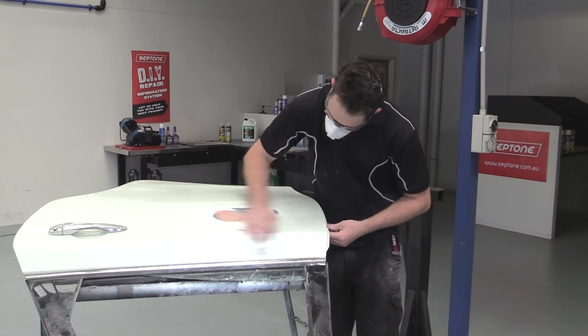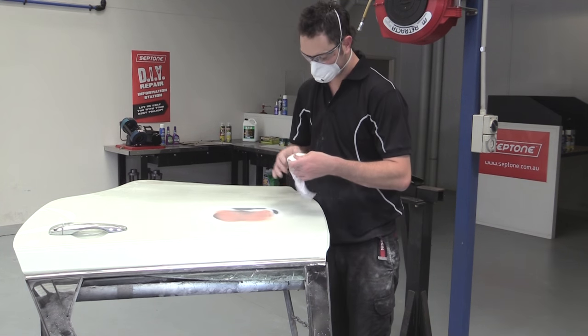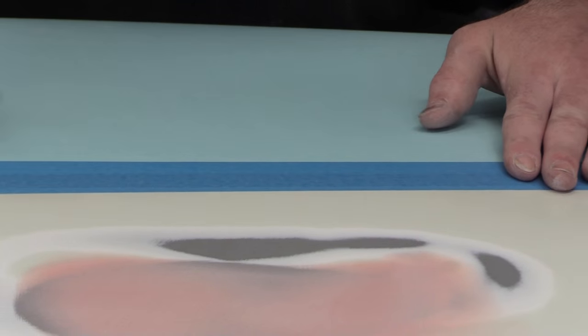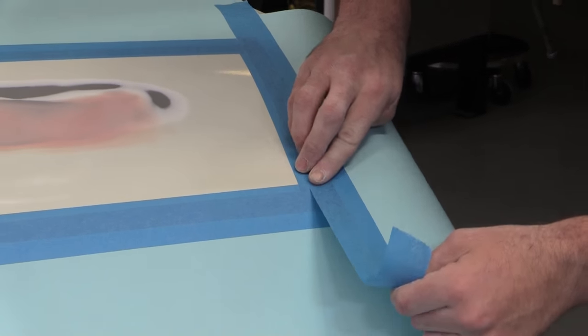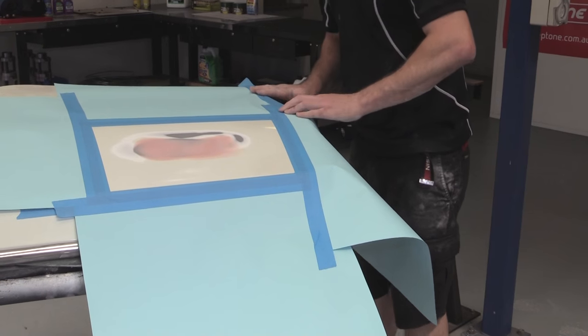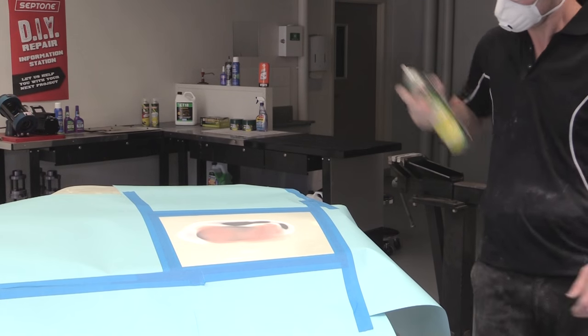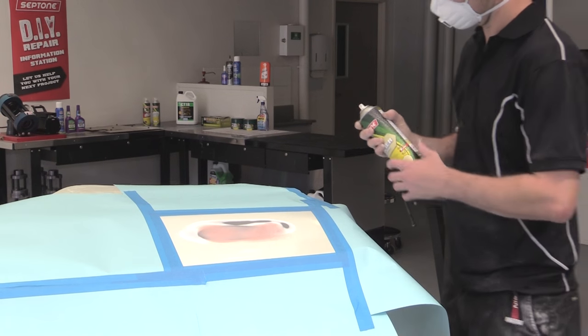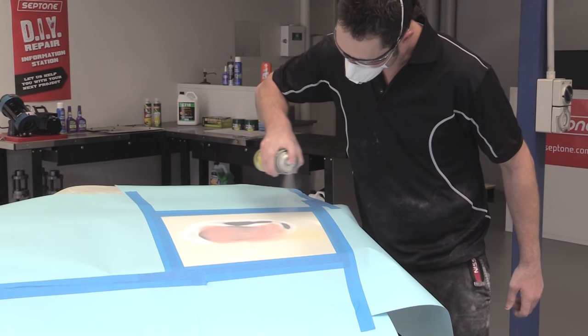Clean sanded area with Septone wax and grease remover. Mask off the repair area in preparation for the primer coat. Apply Septone primer filler. Shake can vigorously for five minutes to ensure that the product is ready.